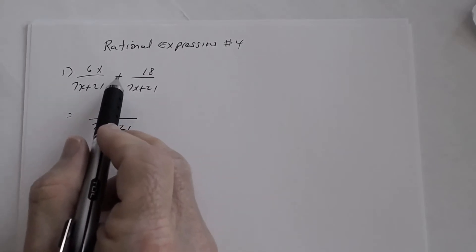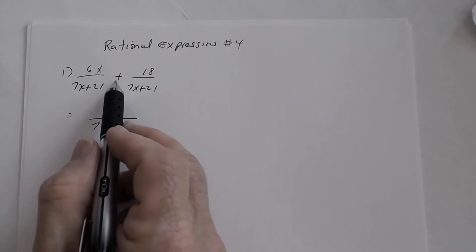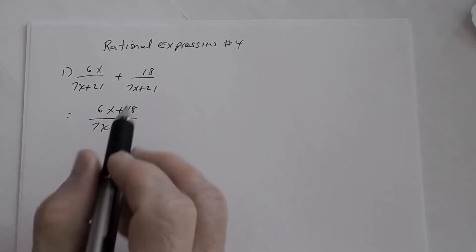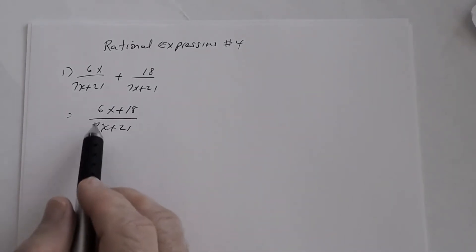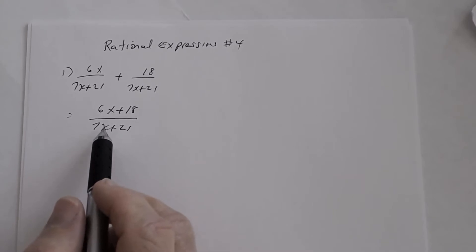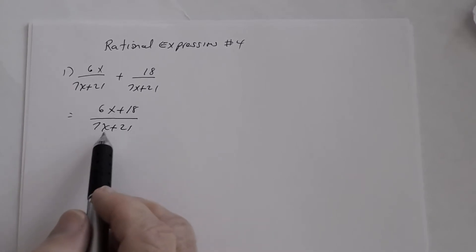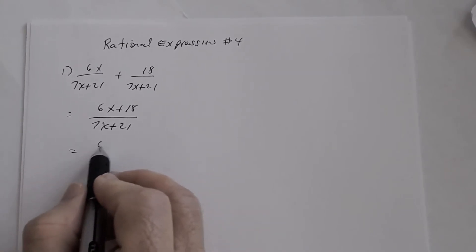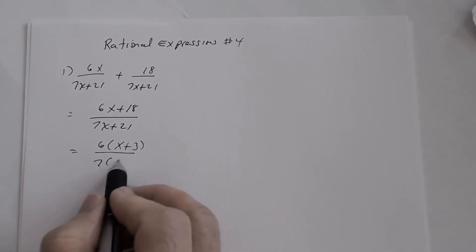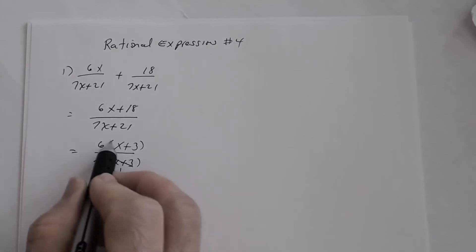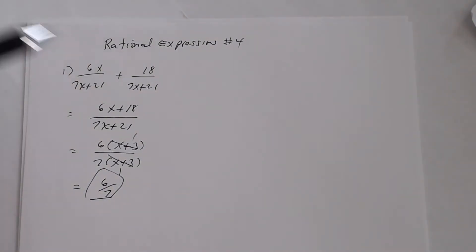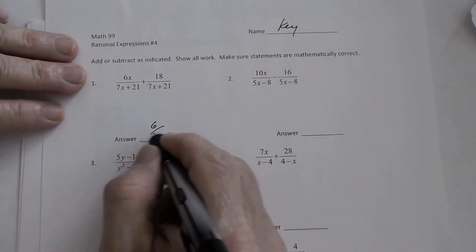This is an easy one because this is an addition problem — it's with subtraction you have to be careful. So my numerator is going to be 6x plus 18. But remember, you have to make sure that you simplify this. You've got to factor the numerator and factor the denominator. When I factor the numerator, I get 6 times x plus 3, and notice that the x plus 3 divides out. So the answer is just 6 divided by 7.